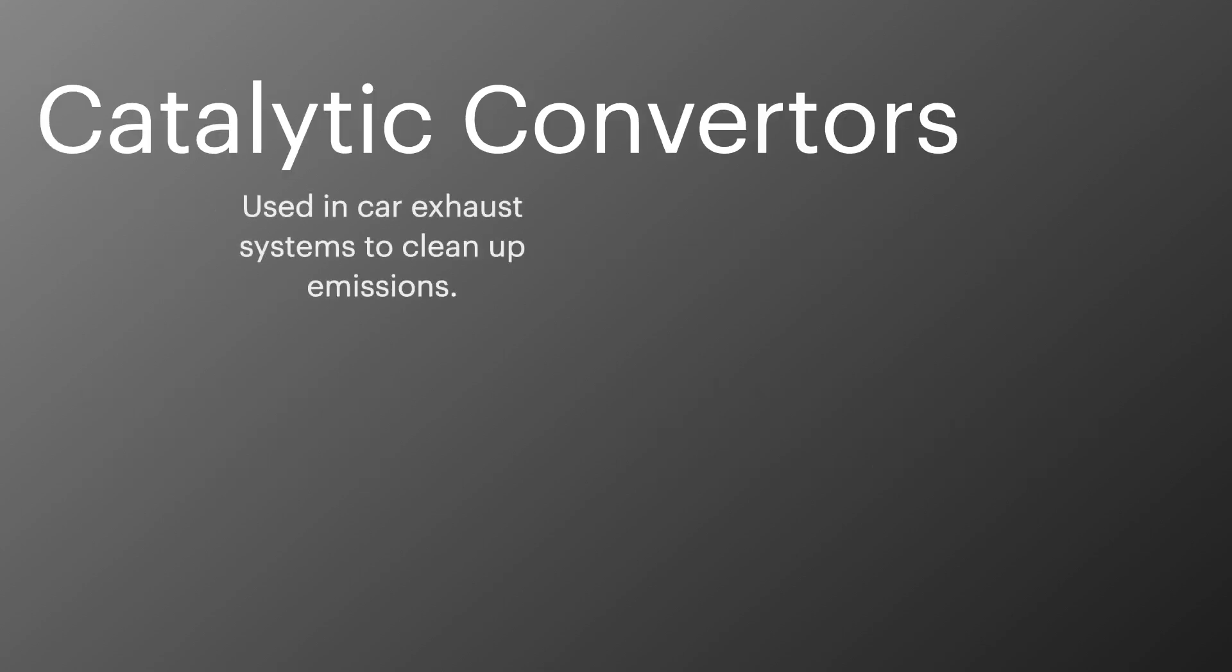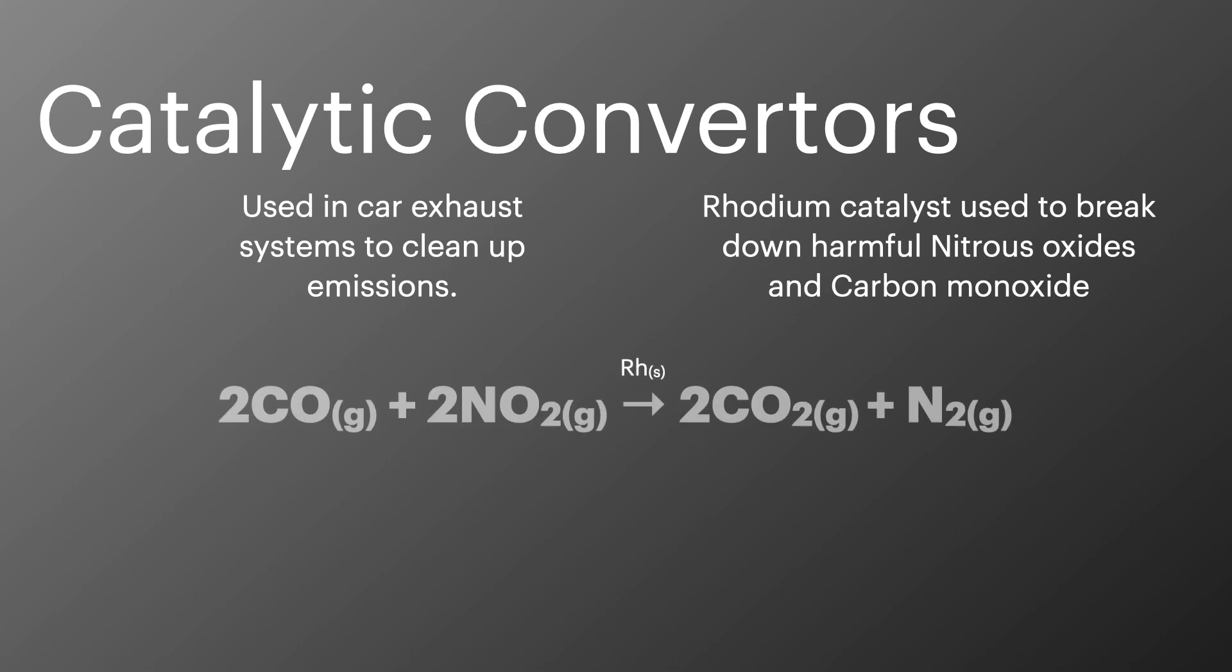Catalytic converters are used in car exhaust systems to break down the harmful waste products such as nitrogen oxides and carbon monoxides. In the equation carbon monoxide and nitrogen dioxide are converted to carbon dioxide and nitrogen using a solid vanadium catalyst. It is also possible to use platinum or palladium metal for the catalyst.